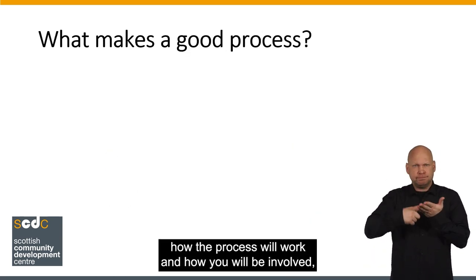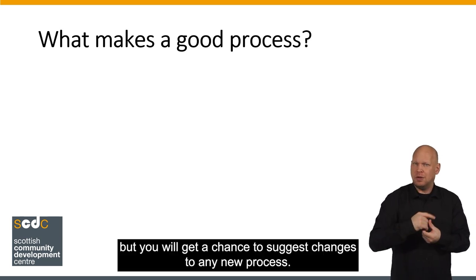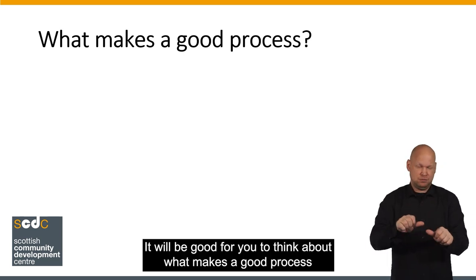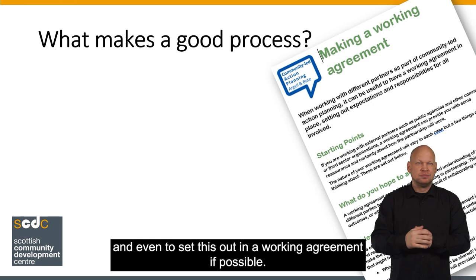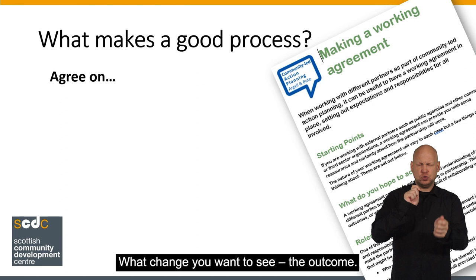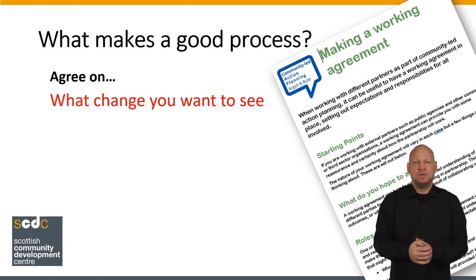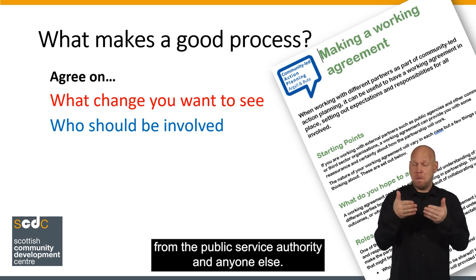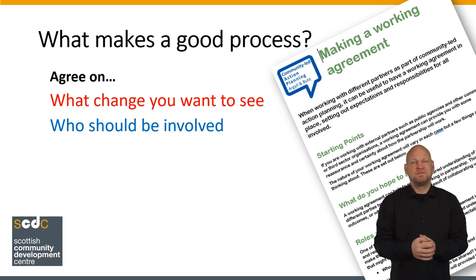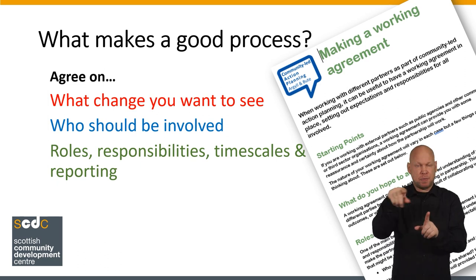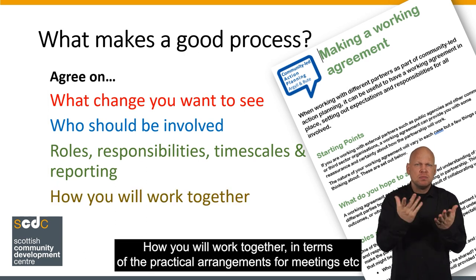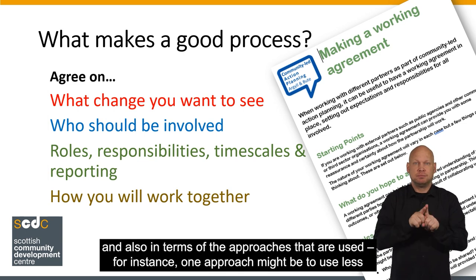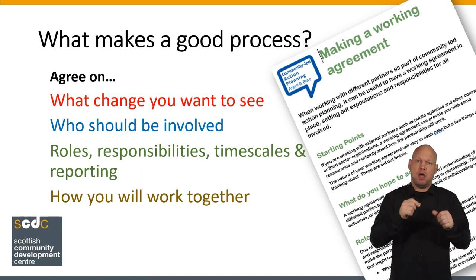The Public Service Authority gets to decide how the process will work and how you will be involved, but you will get a chance to suggest changes to any new process. It will be good for you to think about what makes a good process, and even to set this out in a working agreement if possible. Some of the things to ensure are in place are: what change you want to see — the outcome; who should be involved, including from your group, from the Public Service Authority, and anyone else; the different roles and responsibilities that people will have; what the timescales will be and how reporting will work; how you will work together in terms of practical arrangements for meetings; and also in terms of the approaches used — for instance, one approach might be to use less formal discussions rather than structured meetings, which can be intimidating.